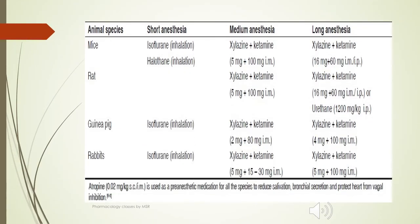When collecting blood samples with anesthesia, the anesthesia provided may be of shorter, medium, or longer duration depending upon the animal. Anesthetic drugs may vary and some of them include isoflurane, ketamine, xylazine, etc.